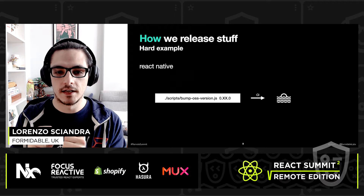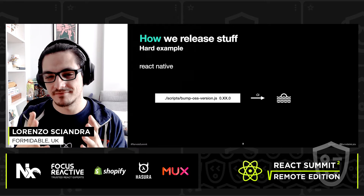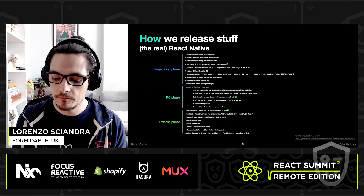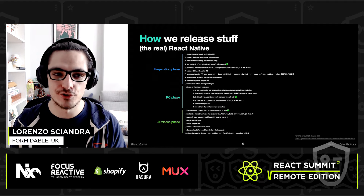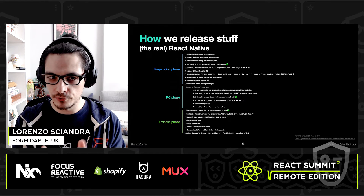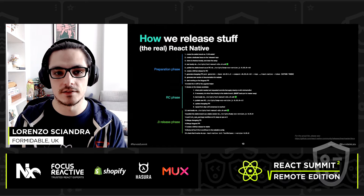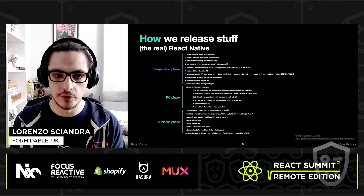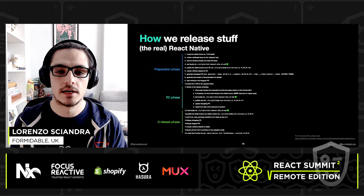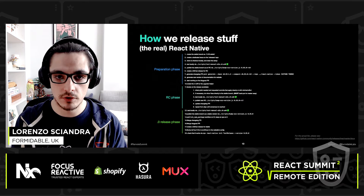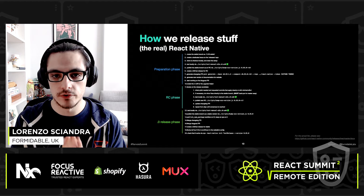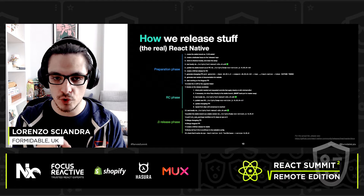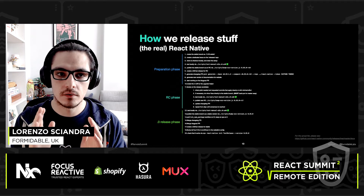And now React Native — this is the hard example. We run a script... and it rides into the sunset. Of course that's not it. This is the real pipeline for releasing a version of React Native. You're probably not able to read all these steps, and that's fine — this is just to showcase how much work goes into any given React Native release. This is what we used for version 62.